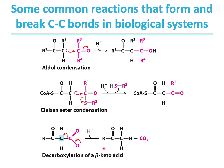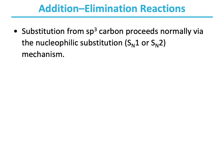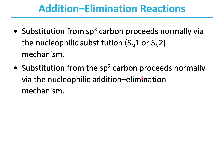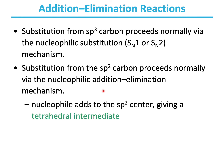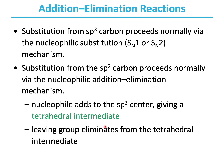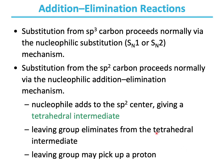Substitution reactions from sp3 carbon proceed via nucleophilic substitution mechanisms such as SN1 or SN2, while substitution from sp2 carbon proceeds via nucleophilic addition-elimination mechanisms. Here, a nucleophile adds to the sp2 center giving a tetrahedral intermediate, and the leaving group eliminates from that tetrahedral intermediate, potentially picking up a proton while leaving.